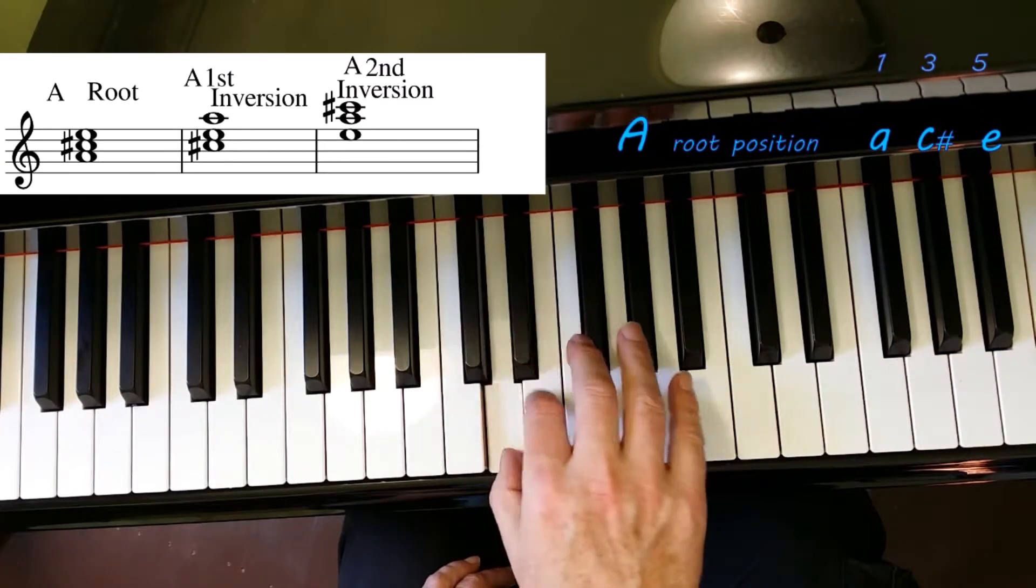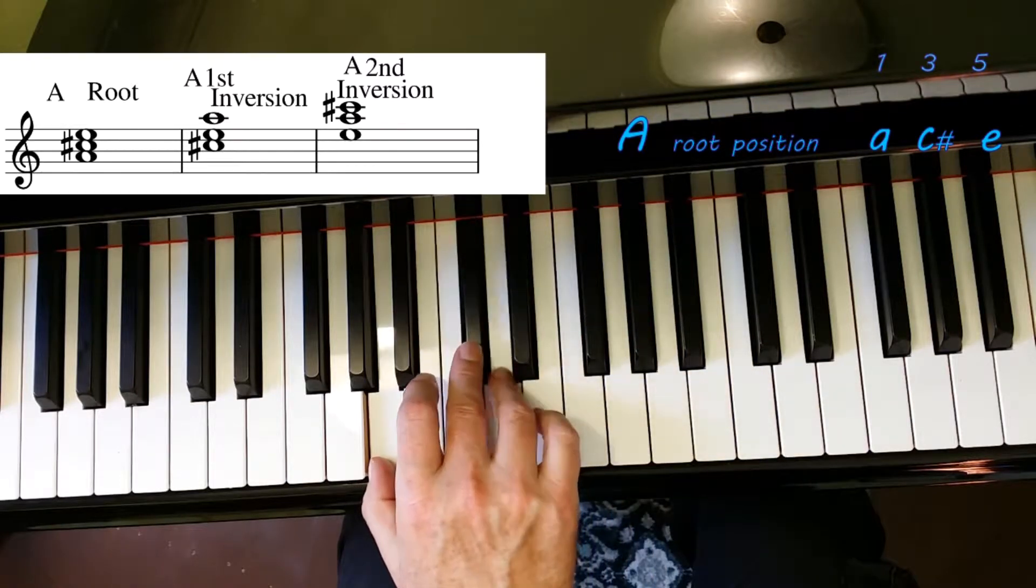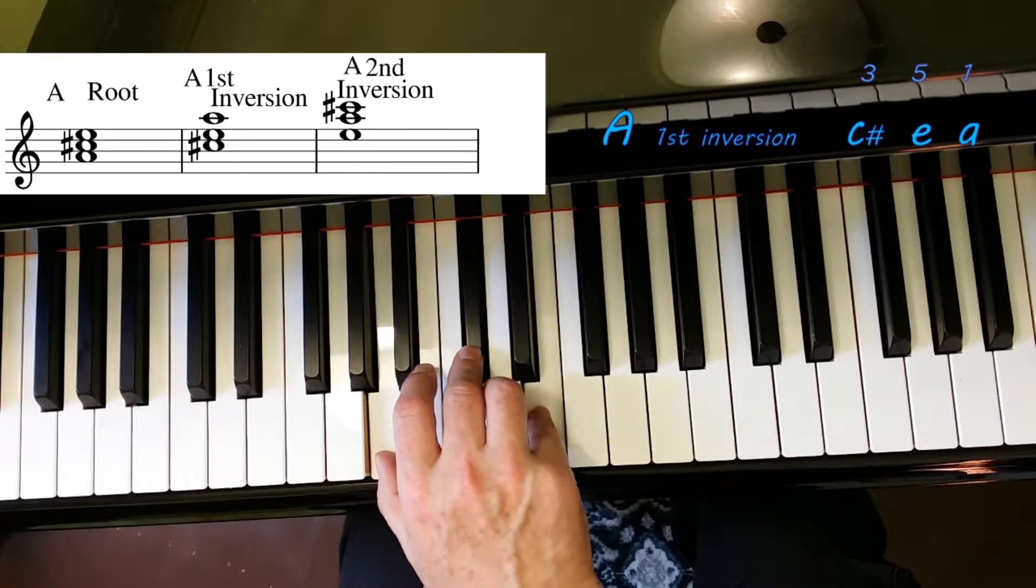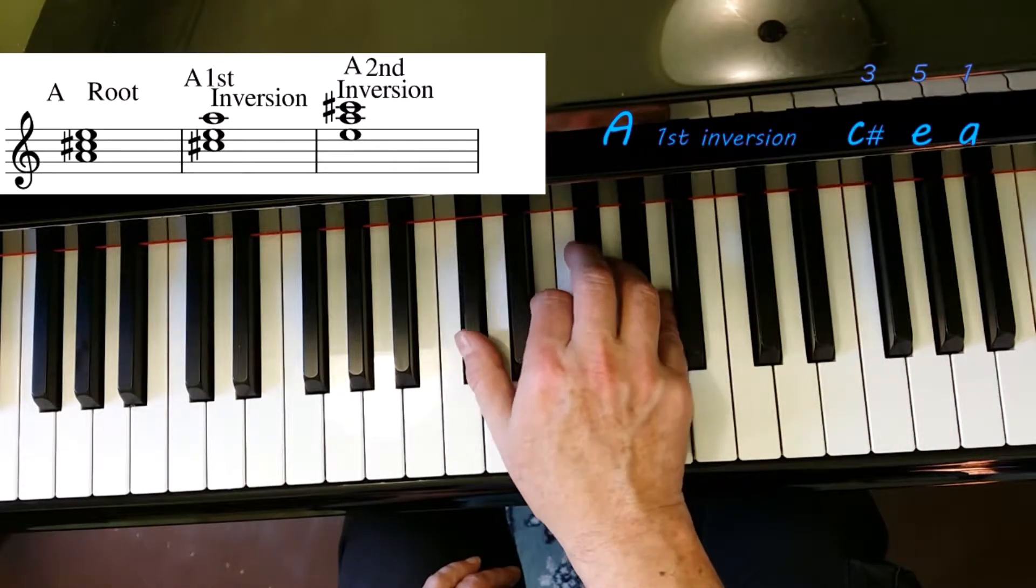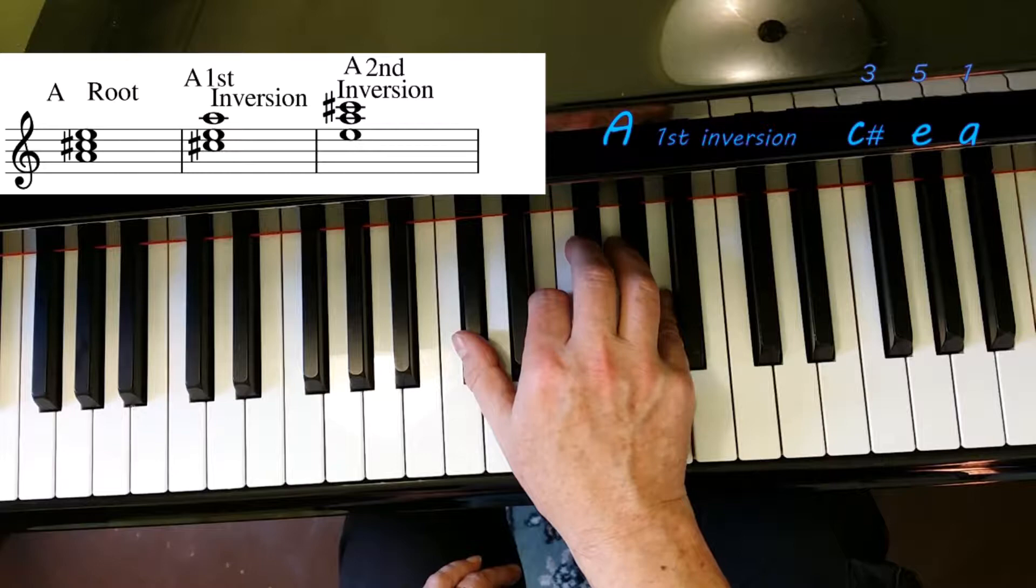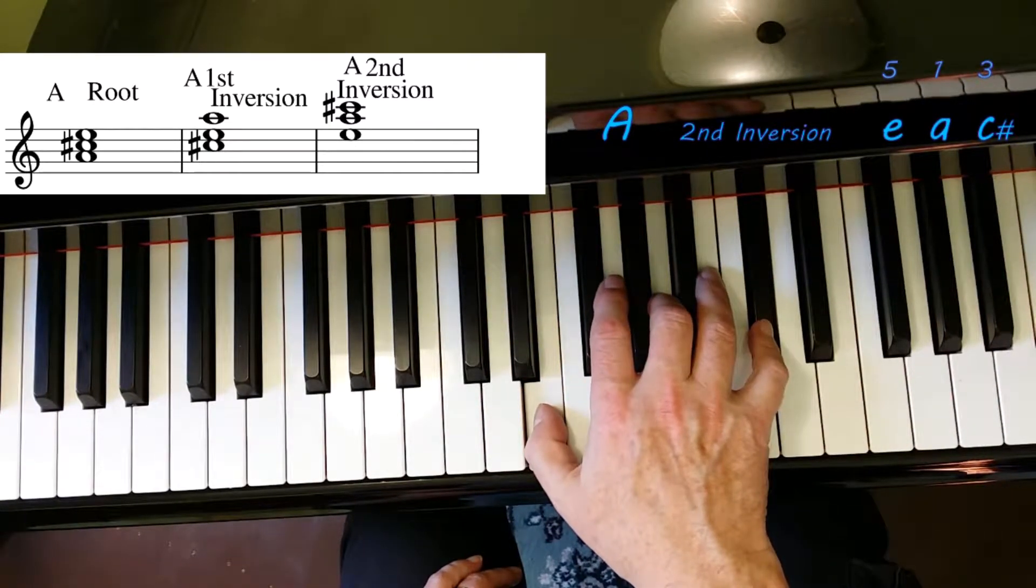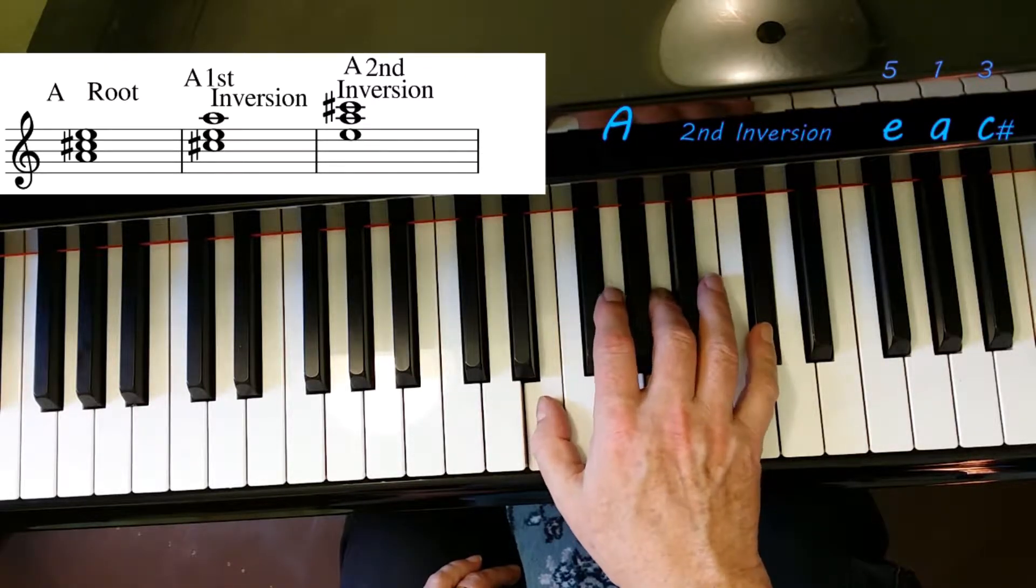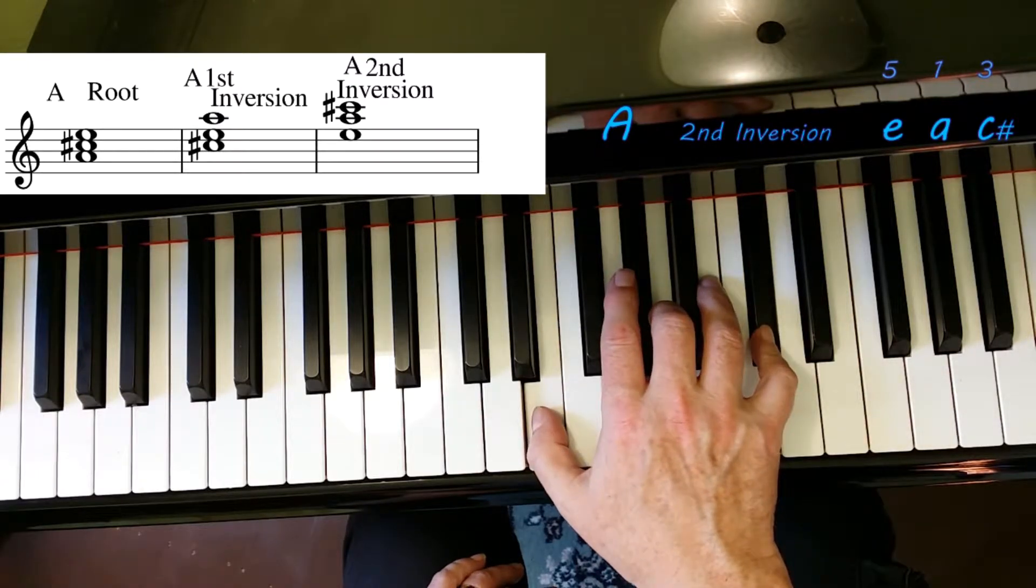I'm sure you're starting to get this pattern, so I'm going to go a little quicker. Three sharps: A major. Five, six, seven, eight. One, three, five—A major root position: A, C sharp, and E. First inversion will be when we put the A on top: A, C sharp, and E. One, three, five. And second inversion when we put the C sharp on top. Easier to think of your second inversion as the root note is in the middle. One, three, five—A, second inversion.